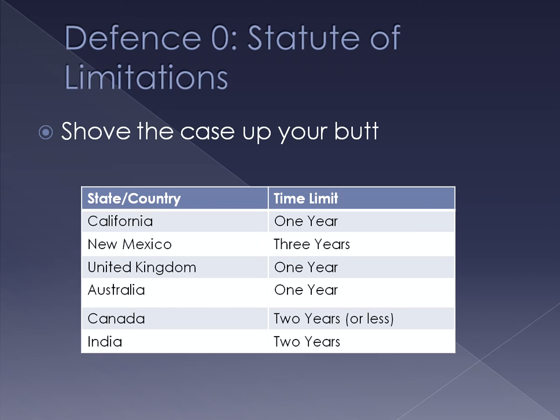The first defence — I'm going to call this defence zero — because it means you don't even have to bother defending the case. If you have a limitation period, it means if the case is not brought within that time — for example in California it's one year, but in New Mexico it's three — it varies country to country. If a case is brought outside of that period, it might not have bothered going ahead at all: there's no way that case will be heard.